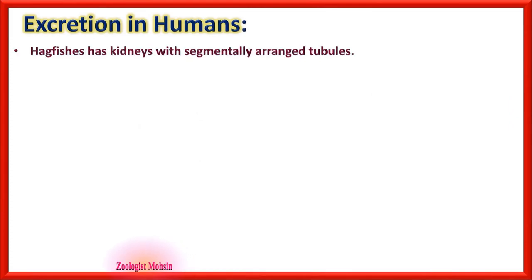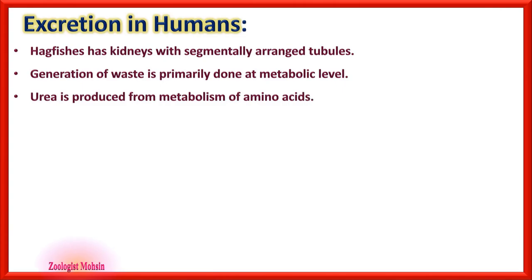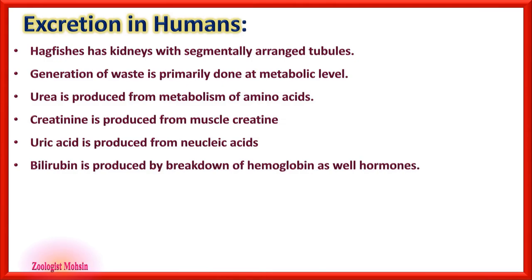Hagfishes have kidneys with segmentally arranged tubules. Generation of waste is primarily done at the metabolic level: urea is produced from metabolism of amino acids, creatinine from muscle creatine, uric acid from nucleic acids, and bilirubin from breakdown of hemoglobin and hormones. The liver is the central station of metabolism — a metabolic clearing house pivotal to homeostasis — and it interacts with most organs.